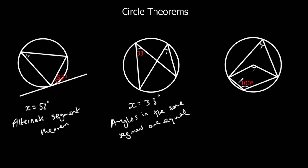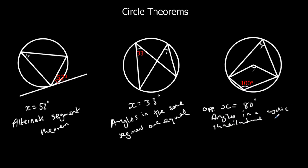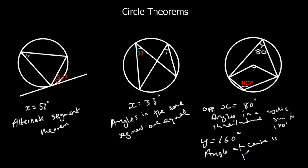And the last one, we've got to work out two angles. Starting with x — if you ignore the lines in the middle, we've got a cyclic quadrilateral. The opposite angles add up to 180 degrees, so x is 80 degrees. Reason: opposite angles in a cyclic quadrilateral sum to 180. Now we've got 80 degrees, and the angle at the center is twice the angle at the circumference, so y equals 160 degrees — double 80. Angle at the center is twice the angle at the circumference.